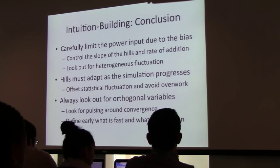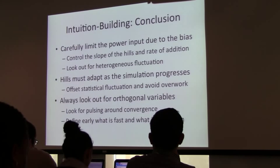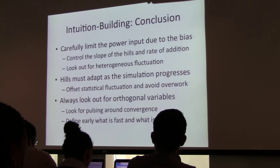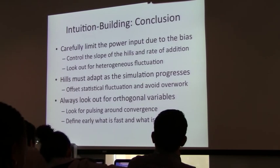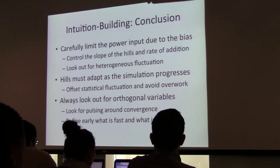To conclude: carefully limit the power input due to the bias — control the slope of the hills to limit this. Look out for heterogeneous fluctuations, and for the diffusion constant being very different at the transition state versus the basin. Hills must adapt as the simulation progresses because the scale of your surface heterogeneities changes as you flatten them. Always look out for orthogonal variables. Look out for pulsing around convergence. Define early what is fast — that says what you don't need to sample more of — and what is forbidden — what you don't want to see or may want to restrain.